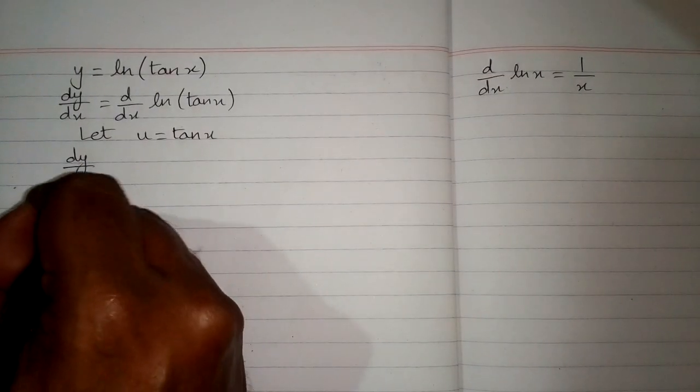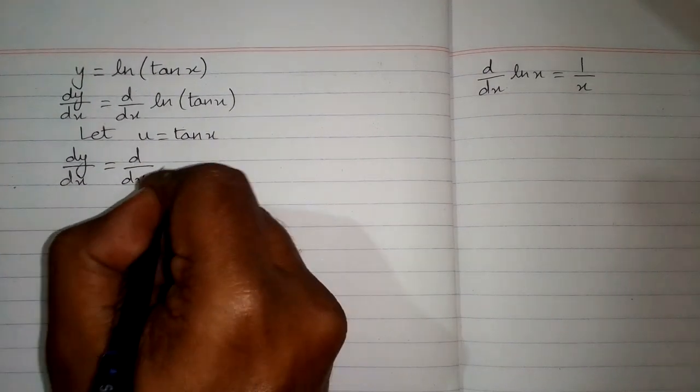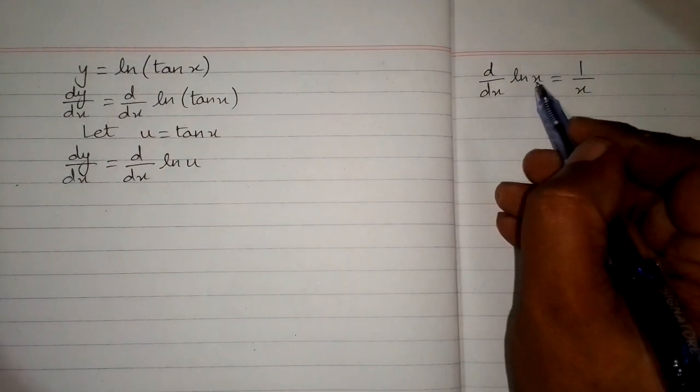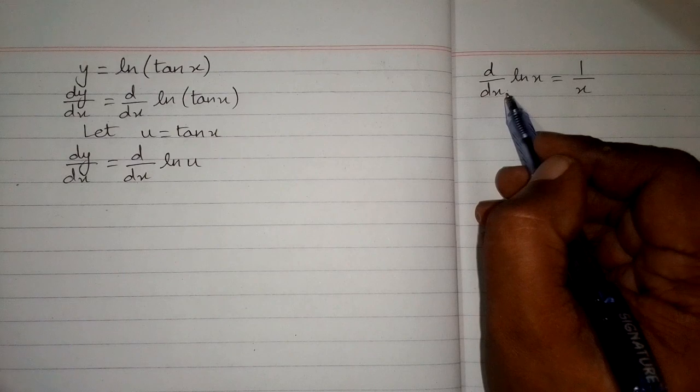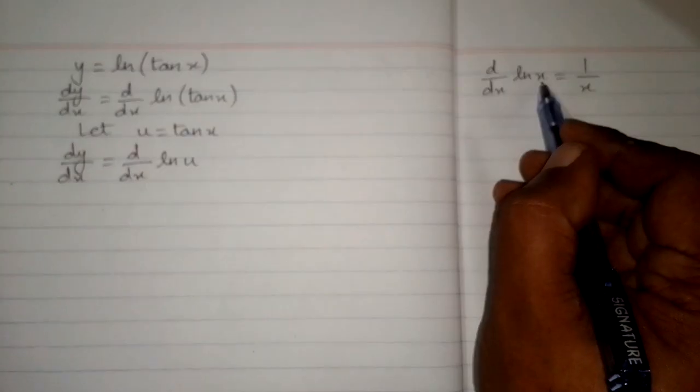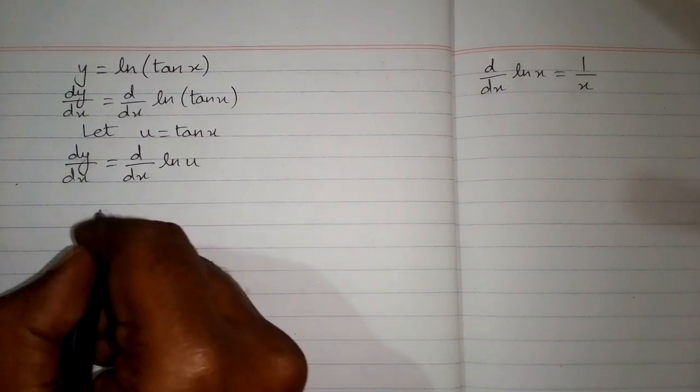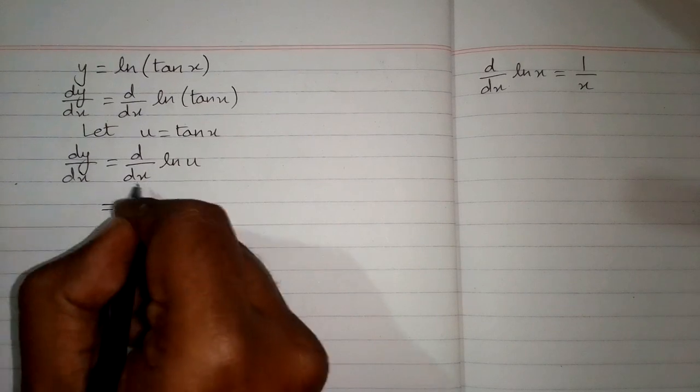So we have dy by dx is equal to d by dx of ln of u. Now we can see that in this formula this variable and this variable must be the same. But here we have u in place of this x, so we must have du in place of this dx.